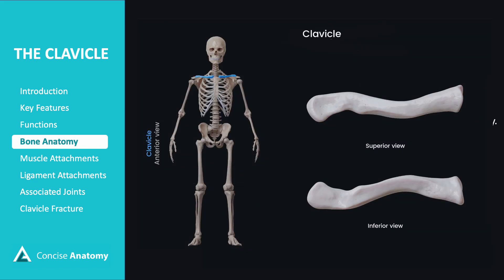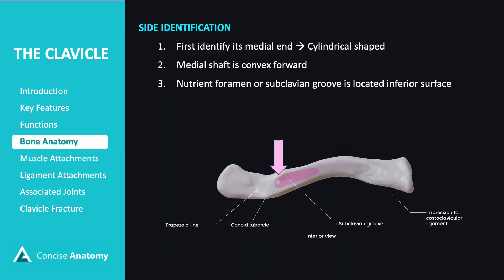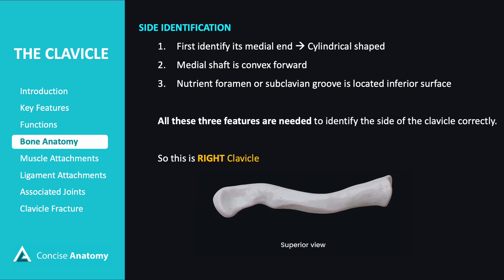Let's talk about how to identify the side of the clavicle. First, check the medial end — this part is cylindrical in shape. Next, look at the shaft; the medial portion should be convex forward. And lastly, flip it over to find the nutrient foramen or the subclavian groove on the inferior surface. Once you've checked these three features, you'll know which side it belongs to. In this case, it's a right clavicle.